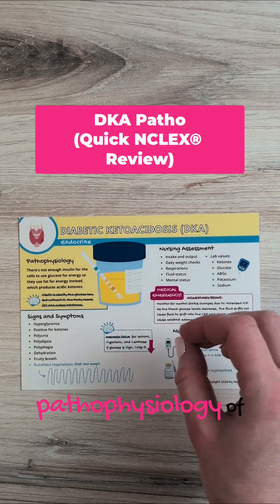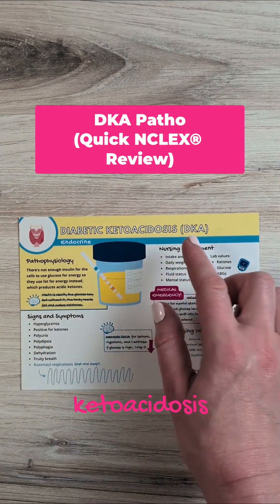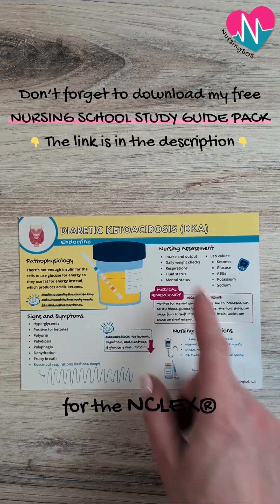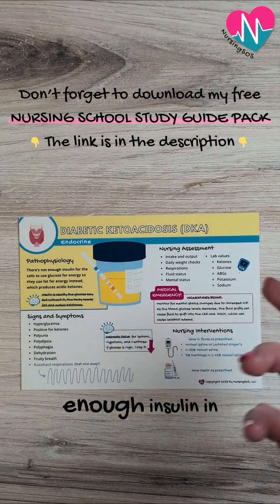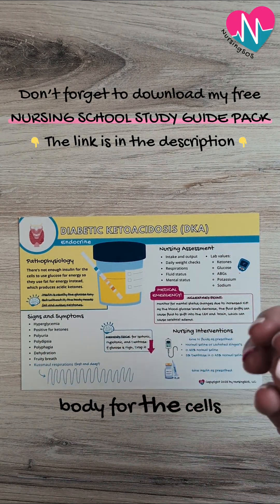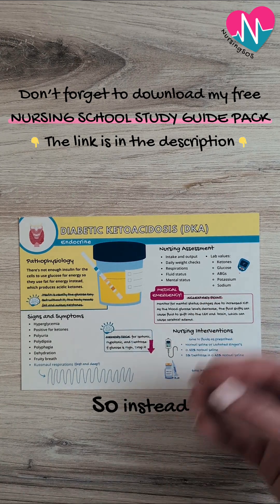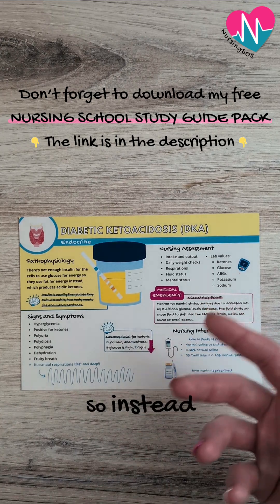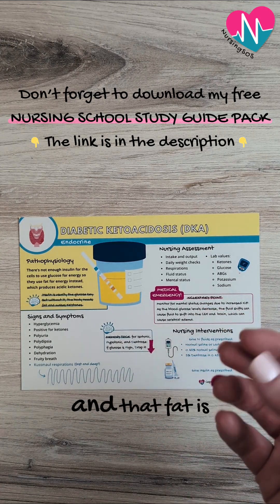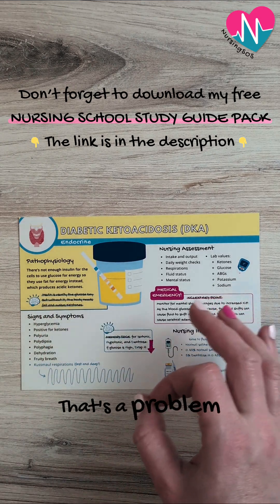Here's what you need to know about the pathophysiology of diabetic ketoacidosis, or DKA, for the NCLEX. There's not enough insulin in the body for the cells to use glucose for energy. So instead, the body is going to use fat, and that fat is going to produce ketones. That's a problem.